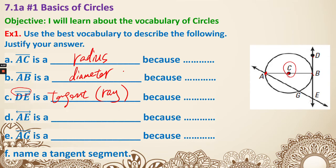AE is right here, and it's going through the circle with two points - that's the reason why it is a secant. Next, AG - we can see this is a line segment. Even though it starts at A and is part of AE, it's not a secant, because both endpoints are actually on the circle within the circle. That is called a chord.